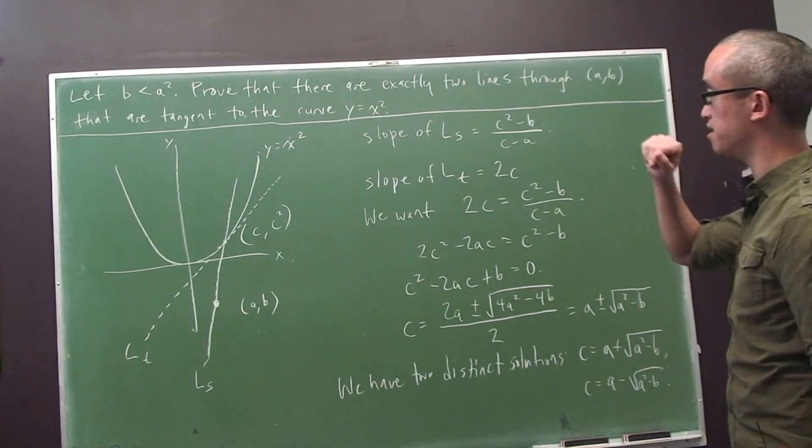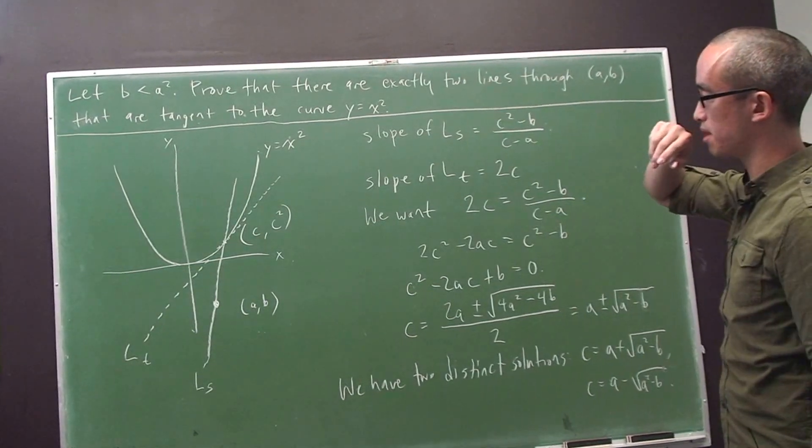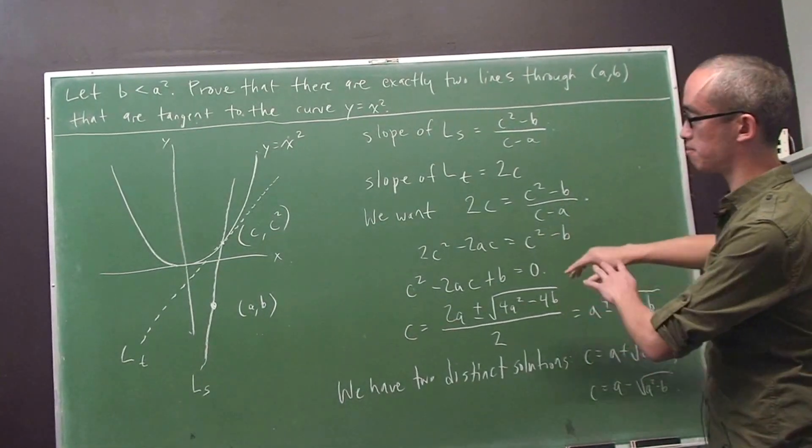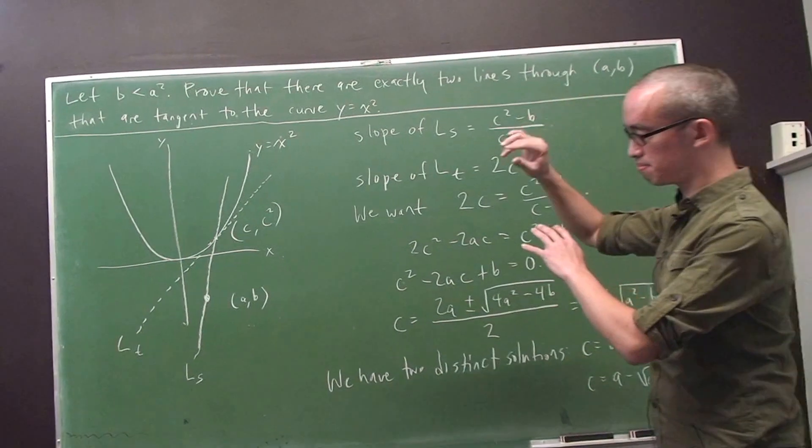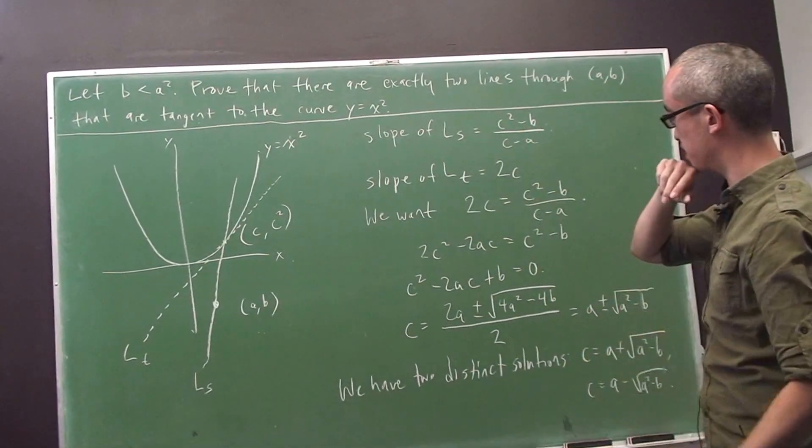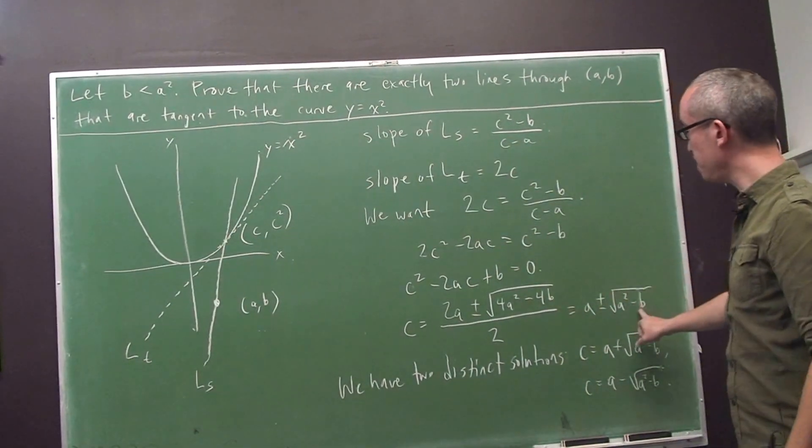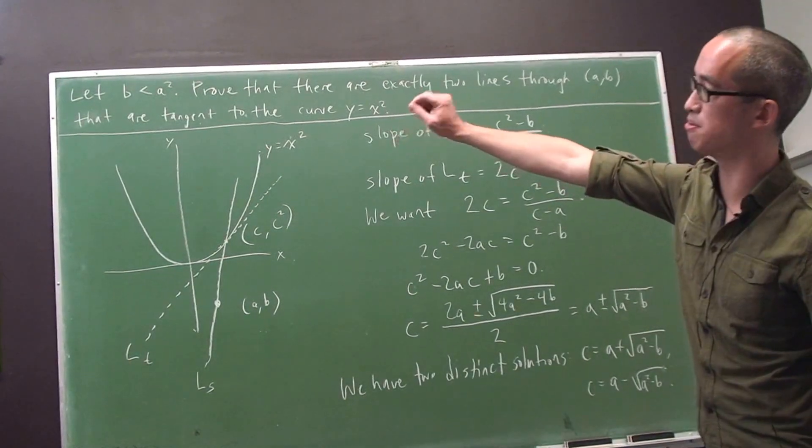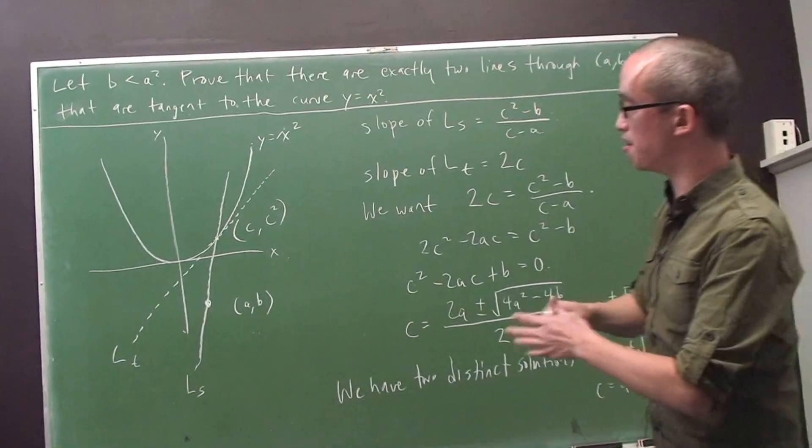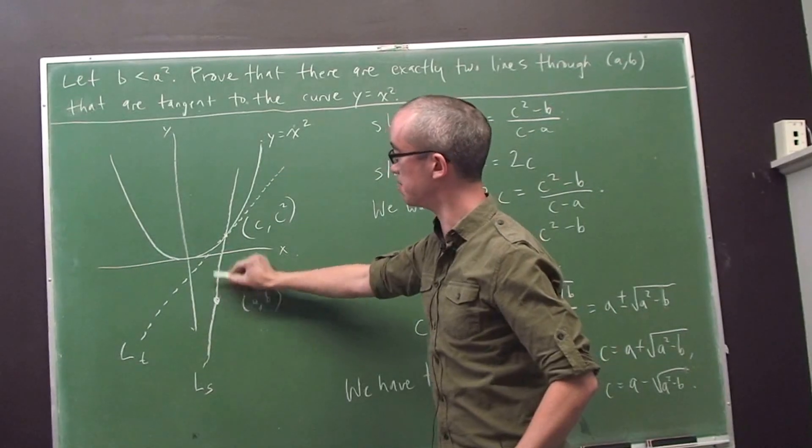Now the curious thing here is that if the condition were changed, you would see that the mathematics would indicate that the picture is still correct. What do I mean by that? So if b were equal to a², if we had not b less than a², but b equal a², that would mean that our point would not be below the parabola, but on the parabola.